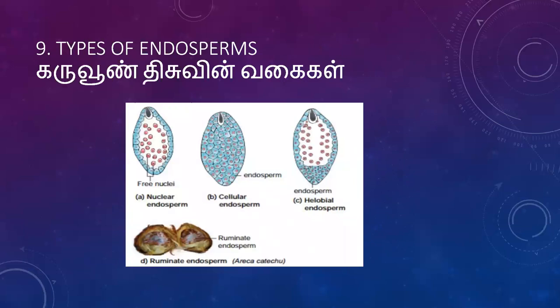Endosperm types: nuclear endosperm, cellular endosperm, helobal endosperm, and ruminant endosperm.